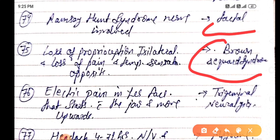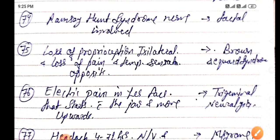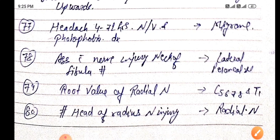Electric pain in her face that starts with the jaw and moves upwards, it is due to trigeminal neuralgia. Headache 4 to 72 hours, nausea, vomiting and photophobia, diagnosis is migraine without aura.